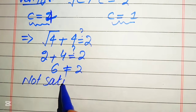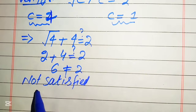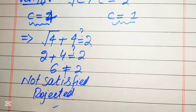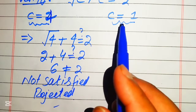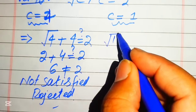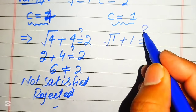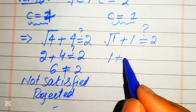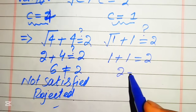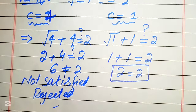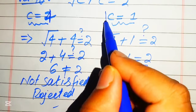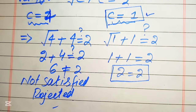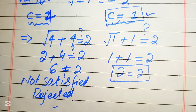Since c equals 4 is not satisfied, we reject this value. We check the other value c equals 1: square root of 1 plus 1 equals 2. The square root of 1 is 1, so 1 plus 1 equals 2, and 2 equals 2. This is satisfied. So we have only one root of the given equation, and that is c equals 1. This is the final answer. Thank you so much for watching this video — please subscribe to my channel for more exciting videos.